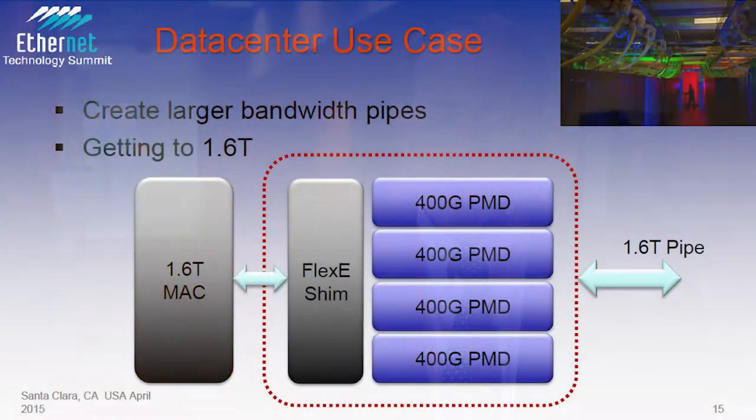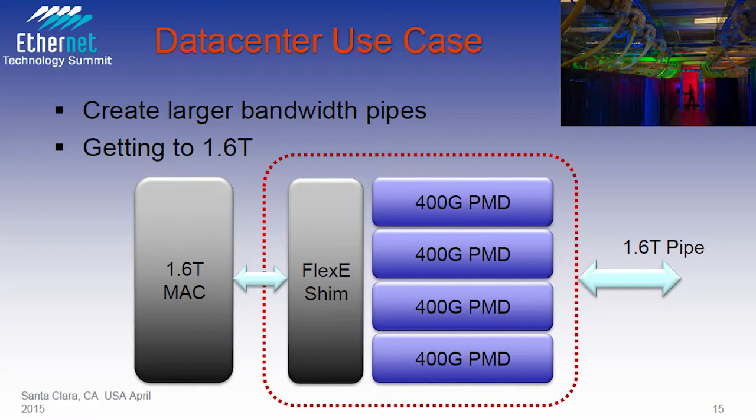The MAC is actually very simple for most of these cases. If you look at the MAC as written in 802.3, it's all a bit-serial device — it's only when it translates to the outside world that complexity arises. So it's very easy to define what a 1.6 terabit MAC looks like. This will allow us to say, once I've got 400-gig technology, I can bond four of those together and have 1.6 terabit, because the MAC is conceptually much simpler.